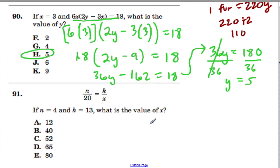In the next problem, it's very similar. They're giving us a proportion, and they have these three variables, n, k, and x. They're telling us that n is 4, k is 13, and we want to find out what x is. So I'm going to put those values in: n over 20 equals k over x. 4 over 20 equals 13 over something.